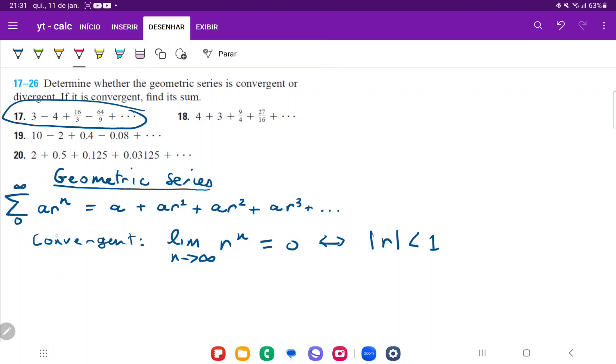So for this series here, we have 3 minus 4 plus 16 over 3. And actually, because there's a bunch of multiples of 4s and multiples of 3, I'm just going to rewrite it as powers. So that's 3 to the power of 1, 4 to the power of 1 plus 16 is 4 to the power of 2 over 3 to the power of 1 minus 64. So minus 4 to the power of 3 over 3 to the power of 2. And we can see that the pattern here, the next one would be plus 4 to the power of 4, 3 to the power of 3, and so on and so forth.